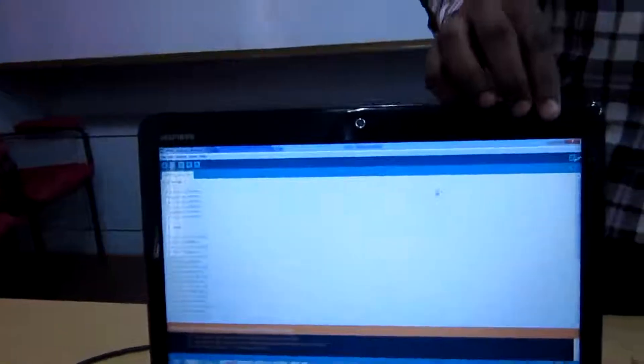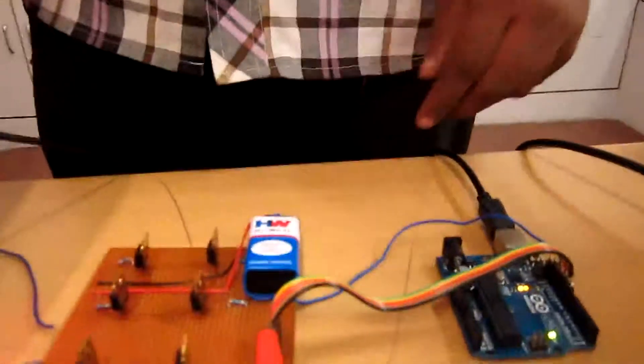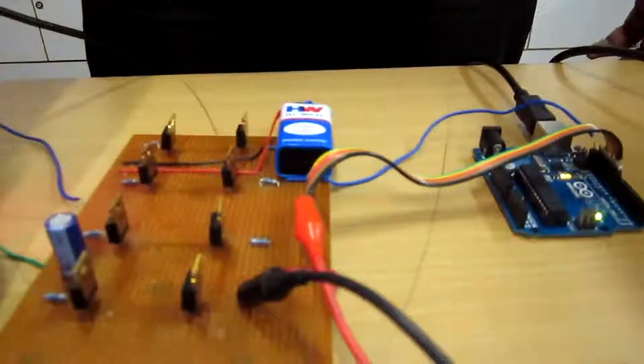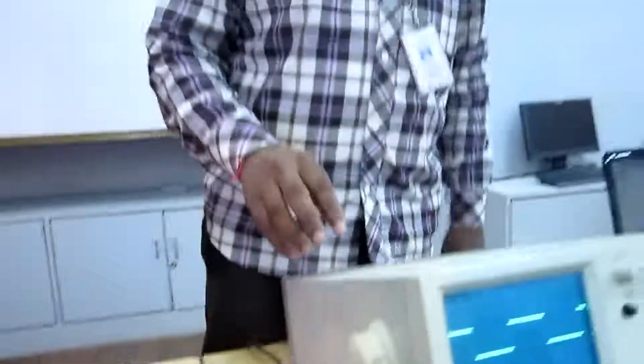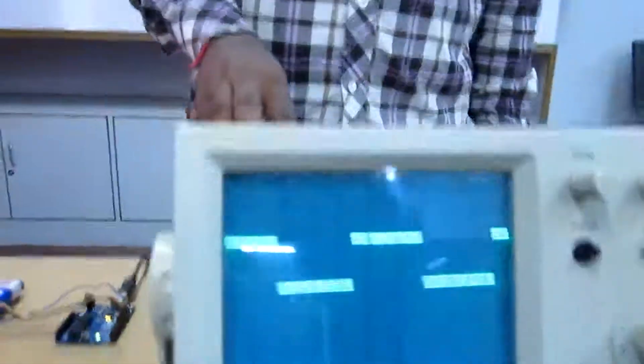The program controls switching of the MOSFETs on and off. The pulses are generated and cause the DC to AC conversion. These are the waveforms I got from the pulse generator.